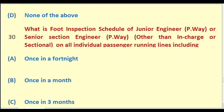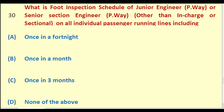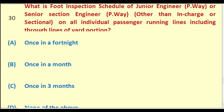What is the foot inspection schedule of Junior Engineer Permanent Way other than in charge or sectional, on all individual passenger running lines including through lines of yard portion? Options: once in a fortnight; once in a month; once in three months; none of the above. The right answer is: once in a month.